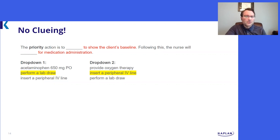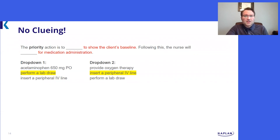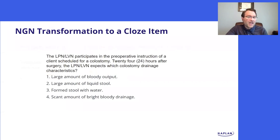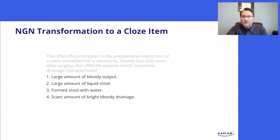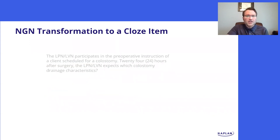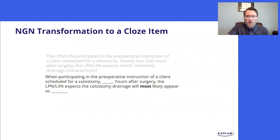If perform a lab draw is correctly chosen in the first drop-down, then that answer choice is no longer plausible for the second drop-down. That's why it's important to have different options in the drop-downs, especially if asking first priority, second priority, etc. With a few edits, this will be a good question. Lastly, here is an example of a four-option multiple choice question.